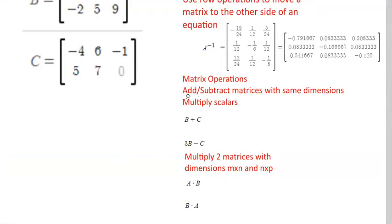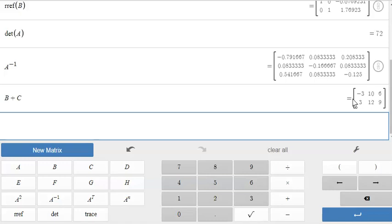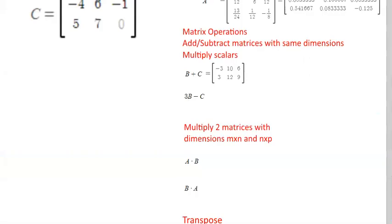For the next one we have matrix operations, adding and subtracting matrices with the same dimensions and multiplying by scalars. Let's try adding the matrix B plus the matrix C. In our Desmos calculator we write B plus C and then enter, and it gives us our sum. Let's try the other example.